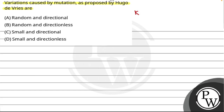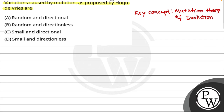The key concept here is the mutation theory of evolution. It was given by a Dutch botanist named Hugo de Vries. In this theory, he stated that mutation is the key mechanism for evolution, and that new species will not arise from gradual changes — they will arise from sudden and significant mutations.